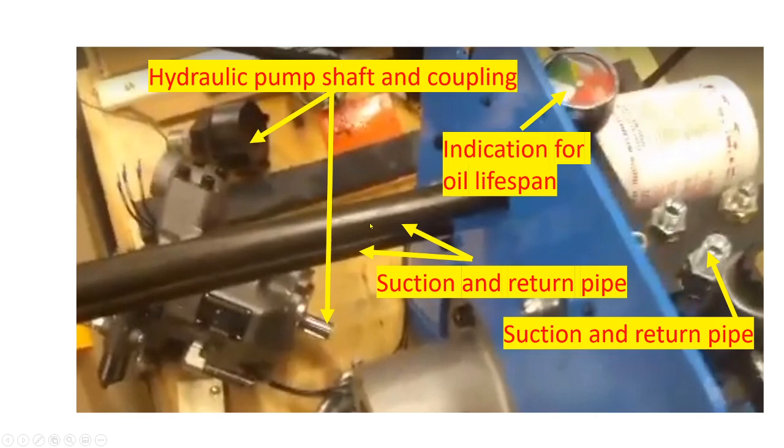This tube pipe is the suction and return pipe of oil. And this is the suction and connection for hydraulic hoses.